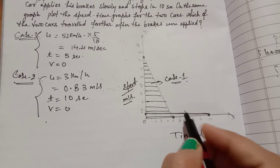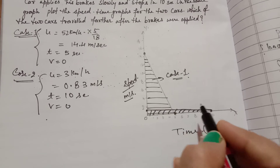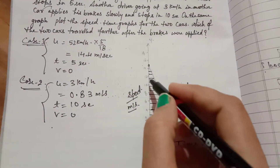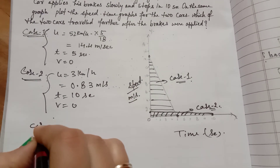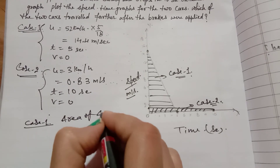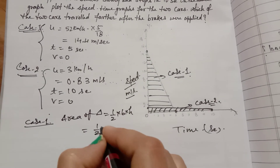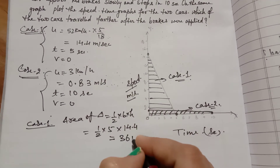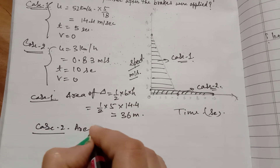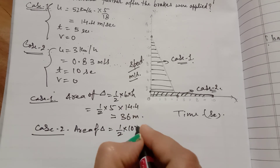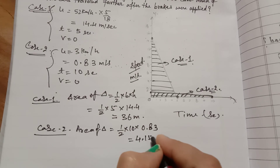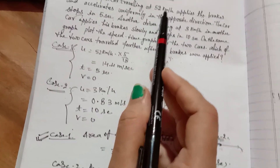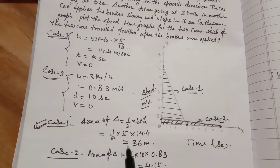The area of each triangle represents the distance covered by the car. Case 1: area = ½ × base × height = ½ × 5 × 14.4 = 36 meters. Case 2: area = ½ × 10 × 0.83 = 4.15 meters. So the car travelling at 52 km/h covers a much greater distance after braking compared to the car travelling at 3 km/h.